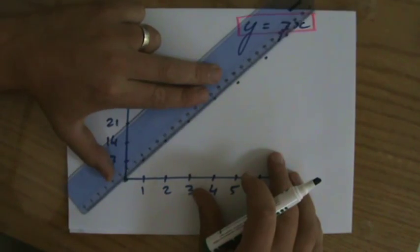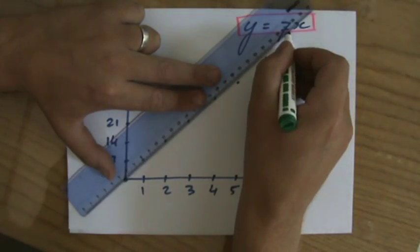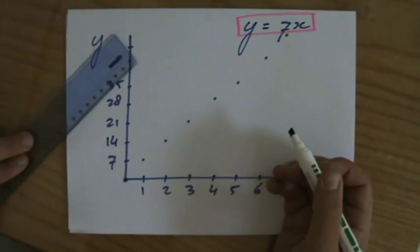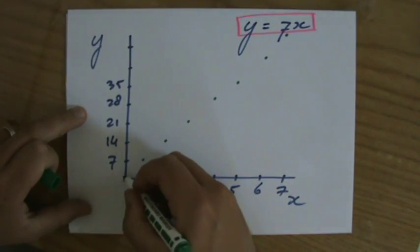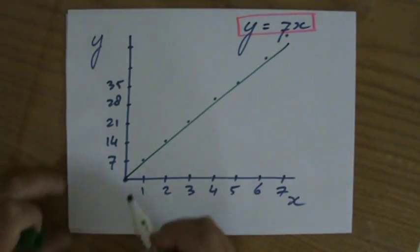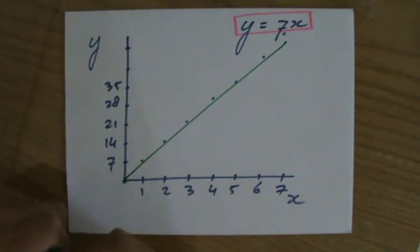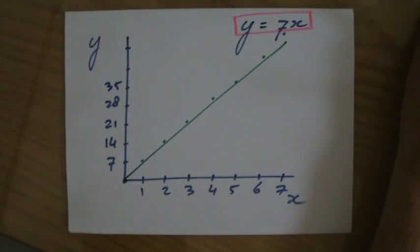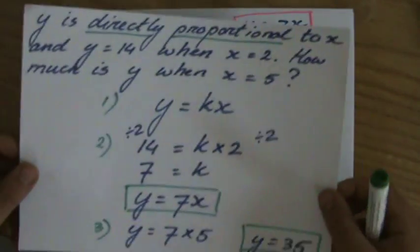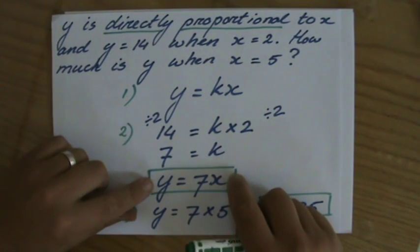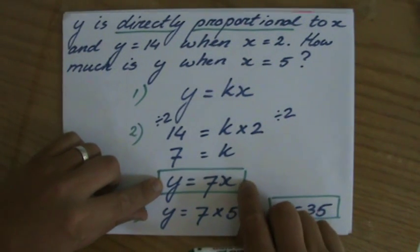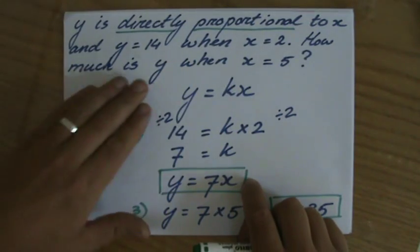Let me sketch it for you. You have a line through the origin. Direct variation: y equals kx, y equals a constant times x. You have to find that constant. Constant is 7, so it's y equals 7x.